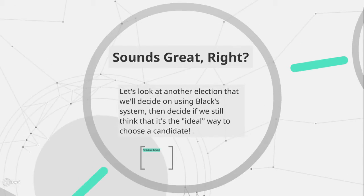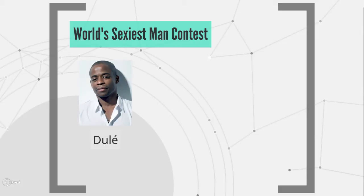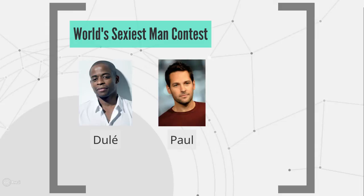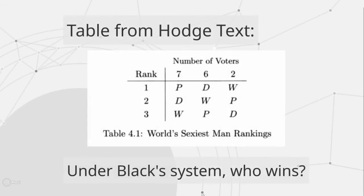So far it sounds like a great system — it satisfies five of the big properties we've been looking at. So let's actually test this out on a possible system that we're going to decide using Black's voting system. This is an example used in our text: a world's sexiest man contest between three finalists. We're going to have this contest between Delay, Paul, and Wayne. Let's say that our 15 judges rank the three finalists as shown in the following preference schedule. This is actually example 4.6 from the Hodge text.